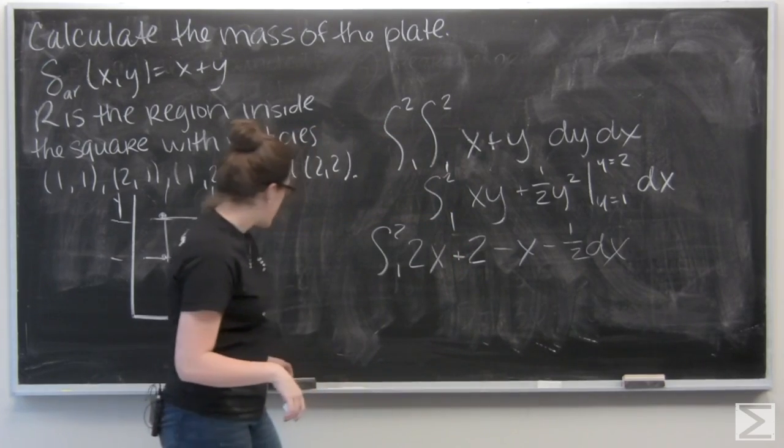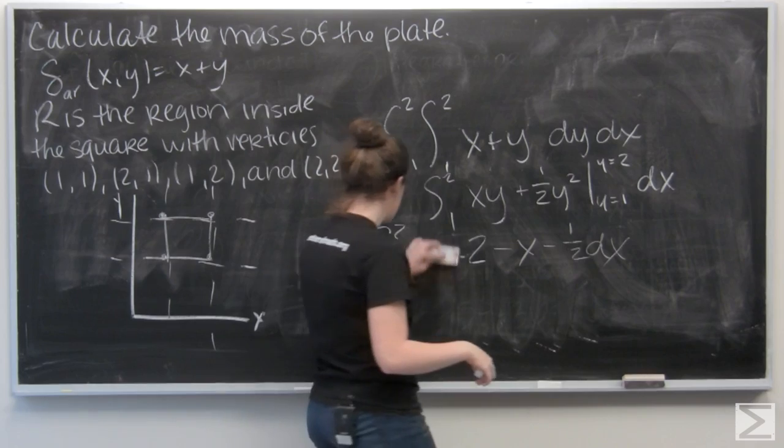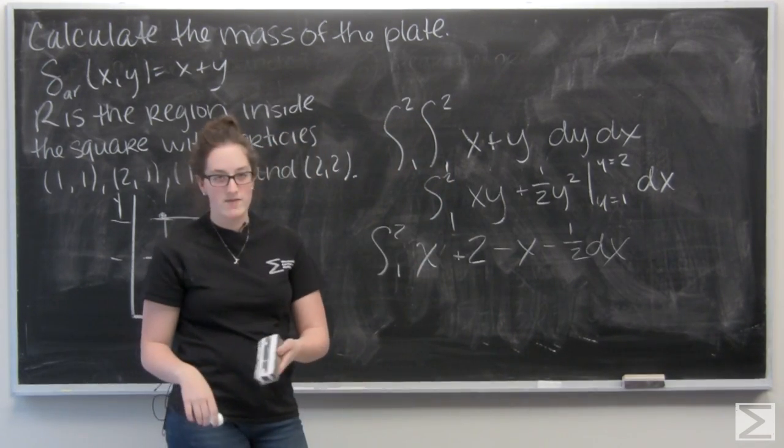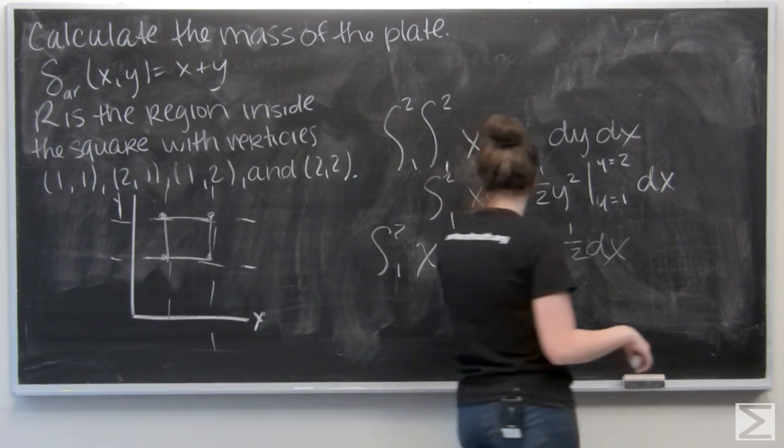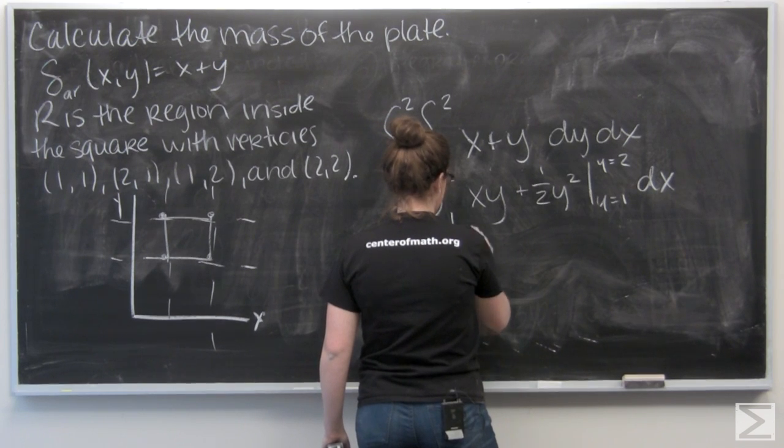So let me go ahead and combine my x's. 2x minus x is just going to be 1x, and 2 minus one-half is three-halves. So x plus three-halves.